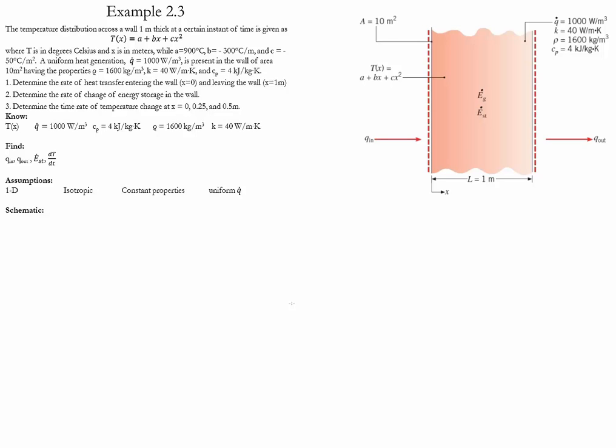Example 2.3. This is a conduction case in which the temperature distribution in a wall is given. There is heat generation within that wall. The cross-sectional area is given. The properties are prescribed as density, conductivity, and heat capacity.